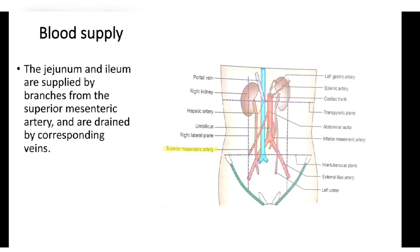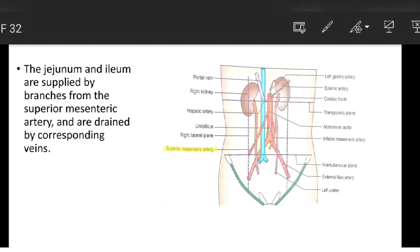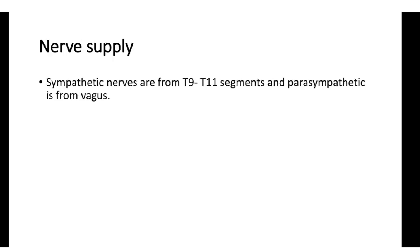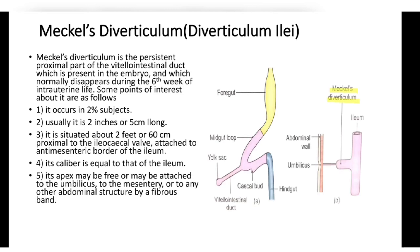Blood supply: the jejunum and ileum are supplied by branches from the superior mesenteric artery and drained by corresponding veins. Lymphatic drainage: lymph from lacteals drains into a plexus in the wall of the gut, then passes into lymphatic vessels in the mesentery, through numerous lymph nodes in the mesentery and along the superior mesenteric artery, ultimately draining into nodes in front of the aorta at the origin of the superior mesenteric artery. Nerve supply: sympathetic from T9–T11, parasympathetic from the vagus.